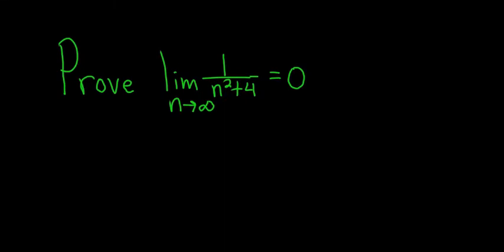Hey, what's up YouTube? In this problem we're going to prove that the sequence 1 over n squared plus 4 converges to 0. In other words, when you take the limit as n goes to infinity, this term 1 over n squared plus 4 approaches 0. We're going to do it using the definition of convergence for sequences.